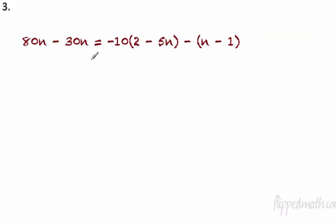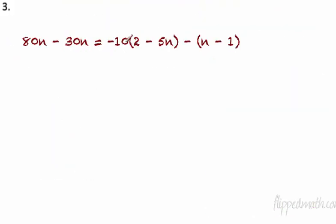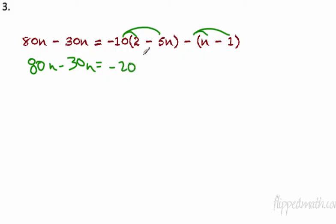Next example, number 3 — this one's ugly. We go back to the steps: first use the distributive property to remove any grouping symbols. On the left side, distribute: negative 10 times 2 is negative 20, and negative 10 times negative 5n is positive 50n. On the right side, there's like a negative 1 in front of that parenthesis — negative 1 times n is negative n, and negative 1 times negative 1 is positive 1.